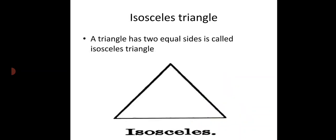Isosceles Triangle: the triangle that has two equal sides is called an Isosceles Triangle. This triangle has two equal sides.